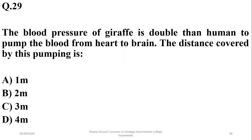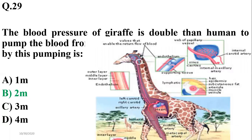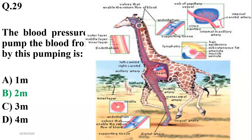Question twenty-eight: the blood pressure of a giraffe is double that of a human in order to pump blood from the heart to the brain. The distance covered by this pumping is up to 2 meters — giraffes have a large distance between heart and brain, requiring twice the blood pressure compared to humans.